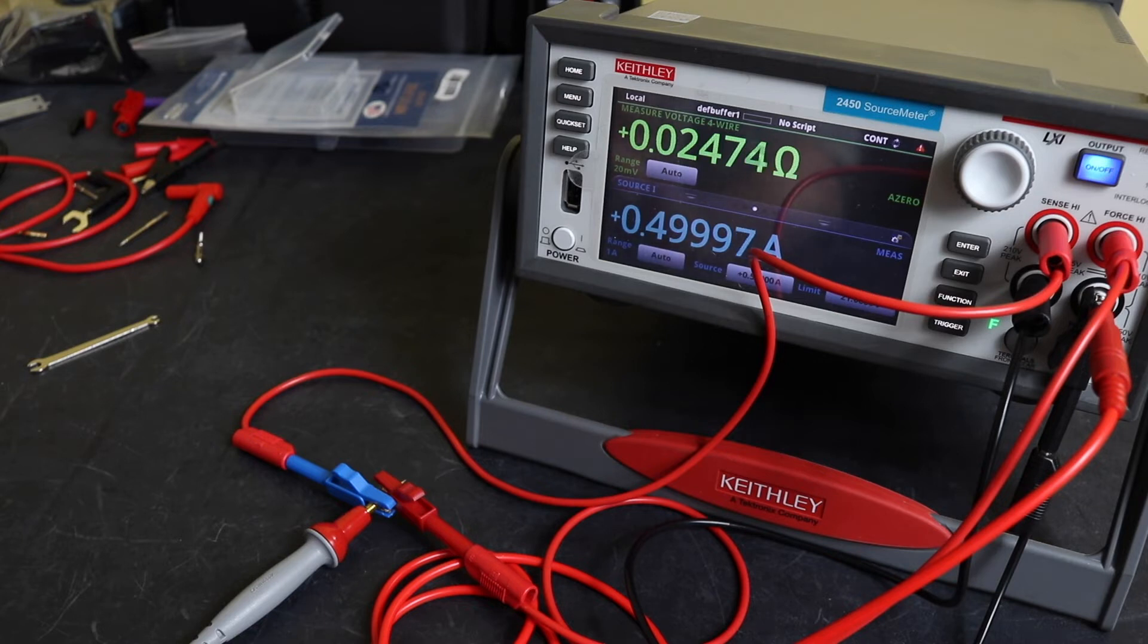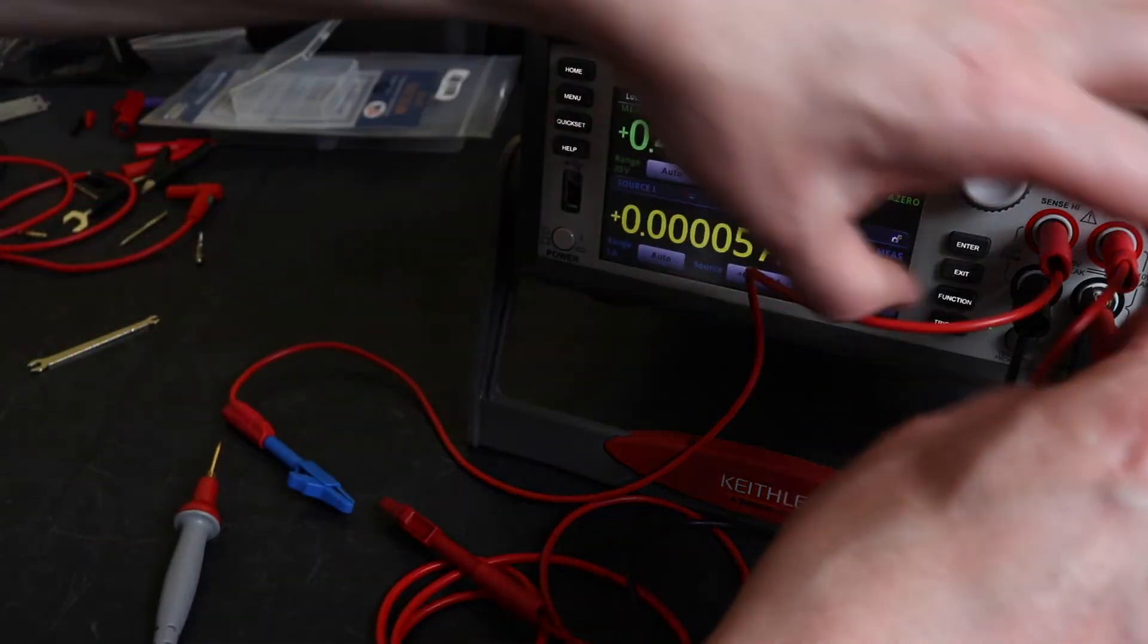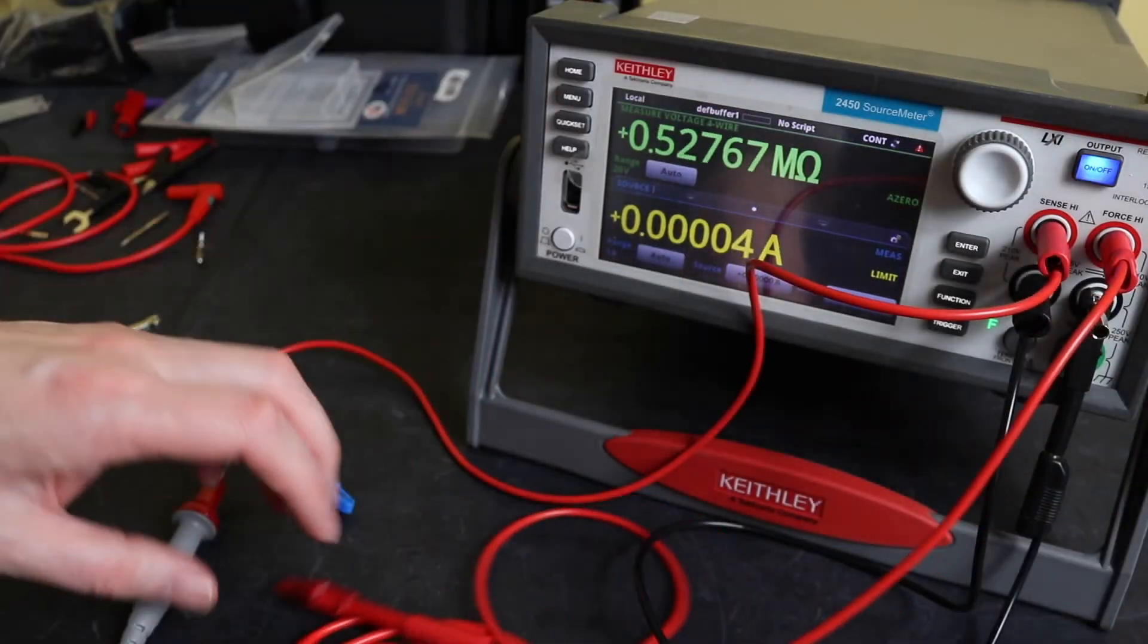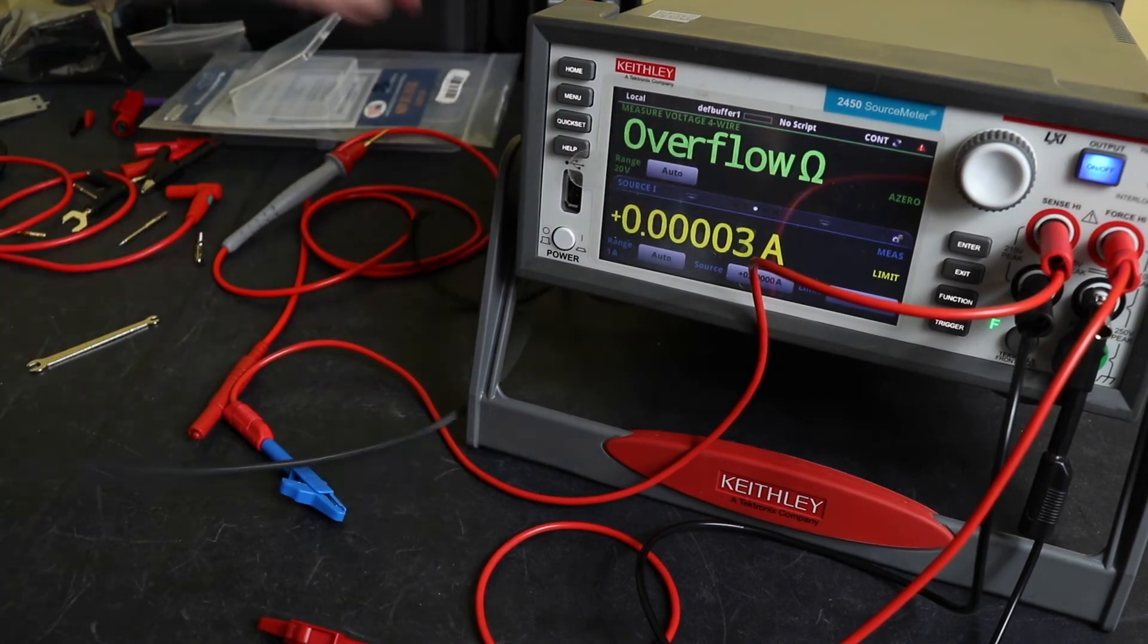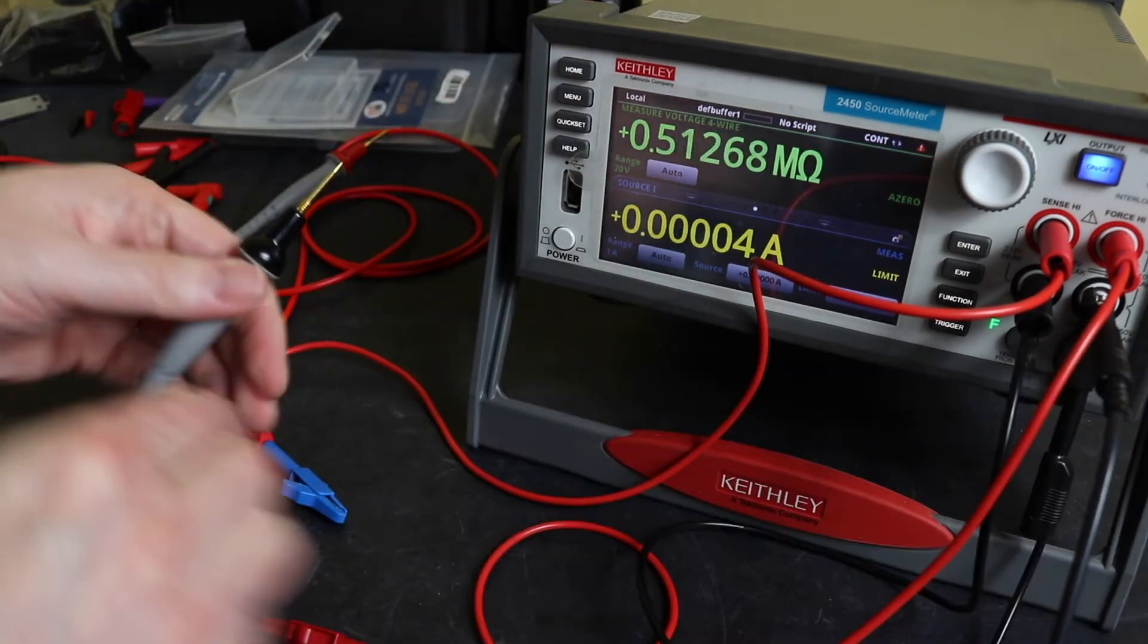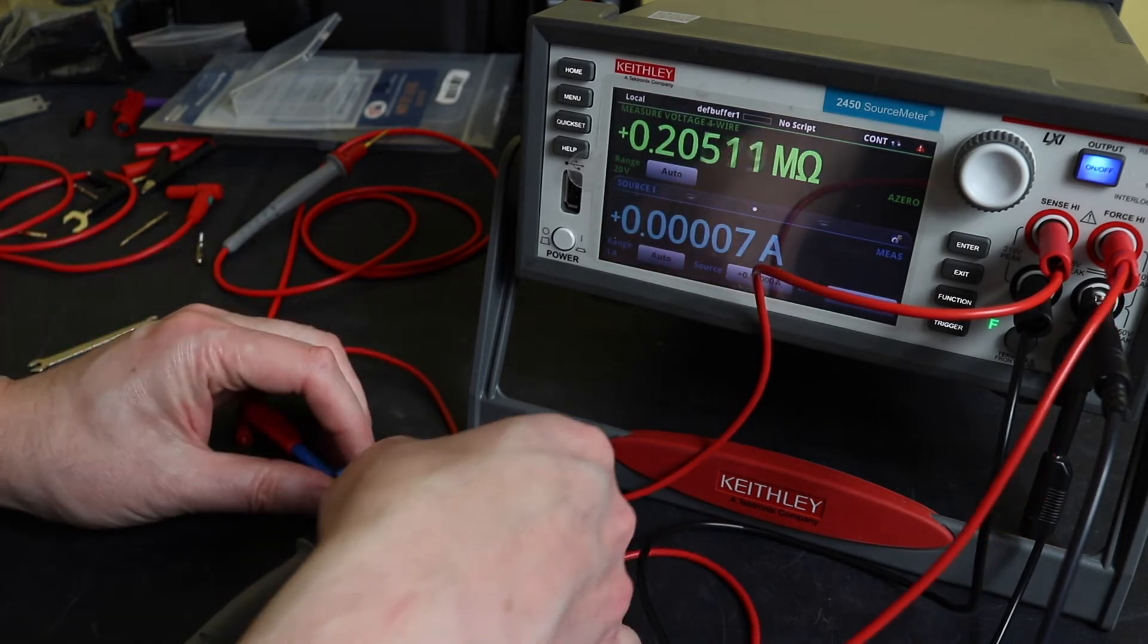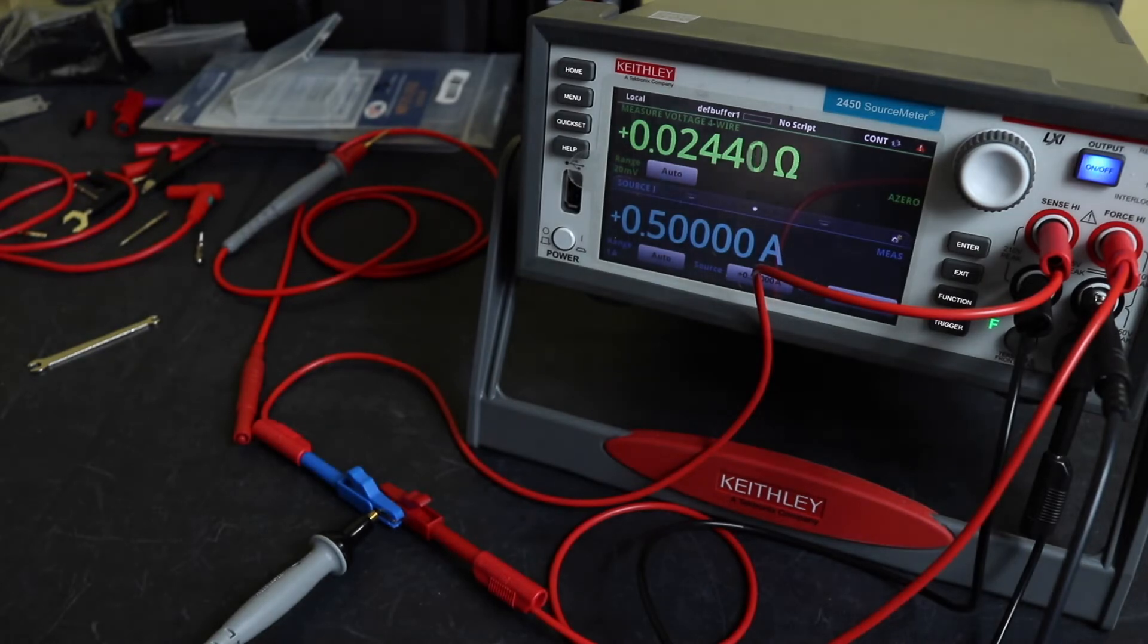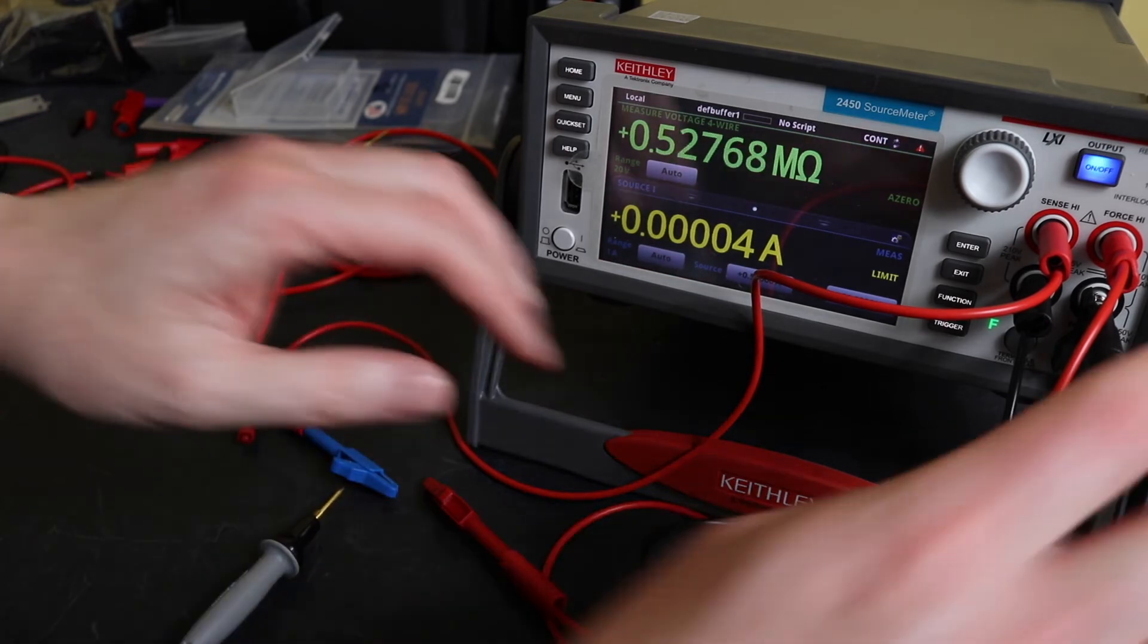Testing the Probe Master red lead, we've got 0.0247 ohms. The black lead measures 0.0243 ohms, so pretty close, can't complain at that.